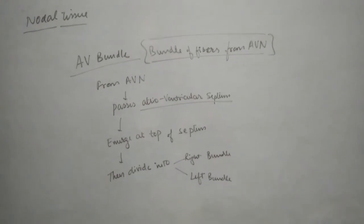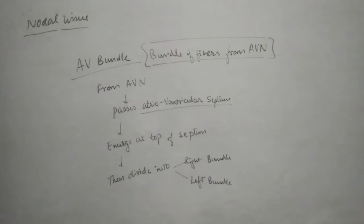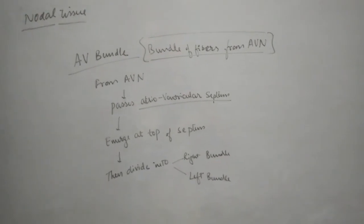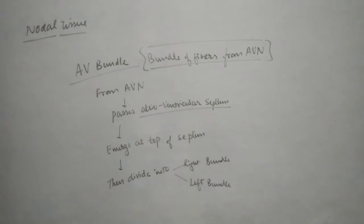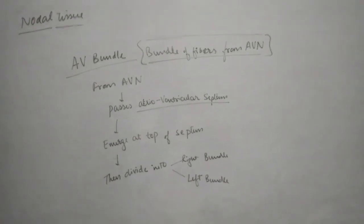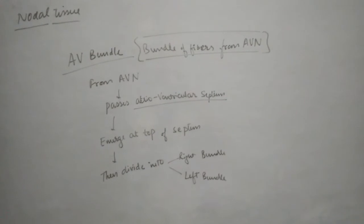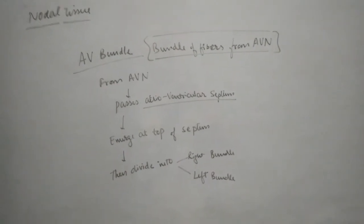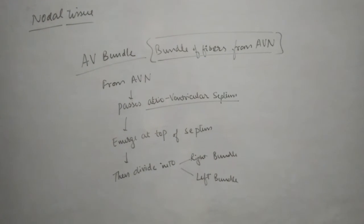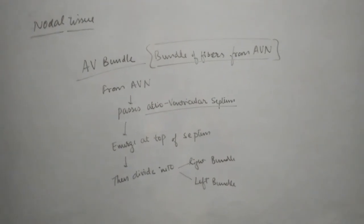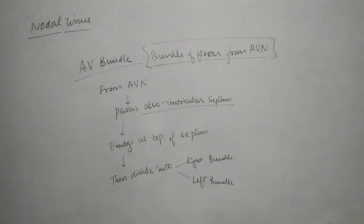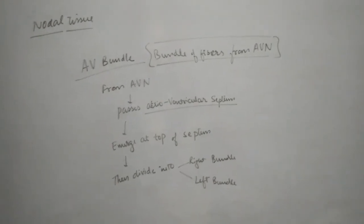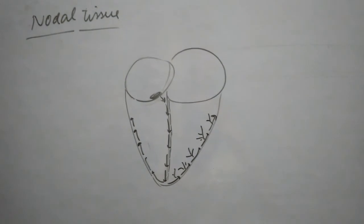After dividing into right and left bundles, they emerge as little branches from their fibers. Discussing further how this is going to cover up the entire heart and how the entire heart generates impulses and pressures, and how blood flow is going to be done.